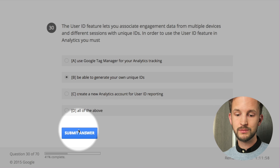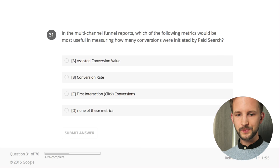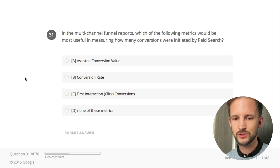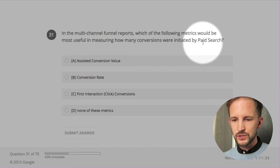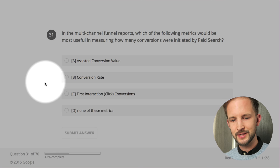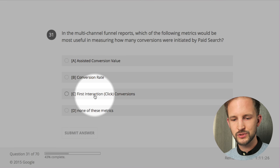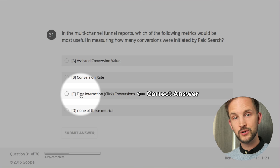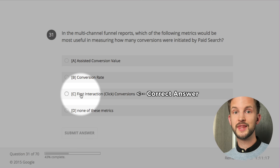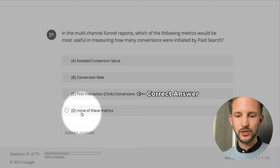In the multi-channel funnel report, which of the following methods would be most useful in measuring how many conversions were initiated by paid search? Assist conversion value - doesn't have it with the value. Conversion rate - no, you don't have conversion rate like that. First interaction click conversion - no, because that is the first interaction click that converted. But we're interested in the one that came first through paid search and then converted. None of these metrics.